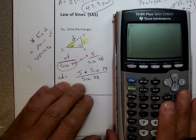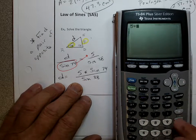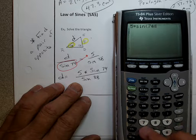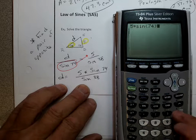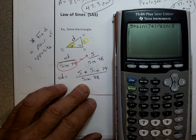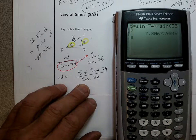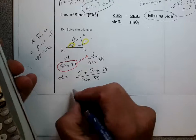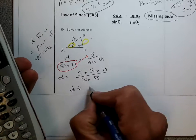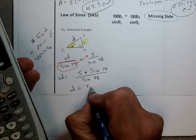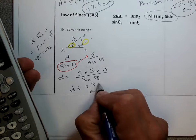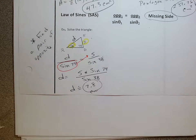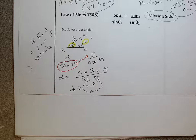Using the calculator: 5 times the sine of 74, close the parentheses, divided by sine of 38, close the parentheses — I get an answer of about 7.8. So D is approximately equal to 7.8 centimeters. Pretty easy — it's just opposites. Opposite side over the sine of its opposite angle equals opposite side over the sine of its opposite angle.